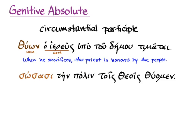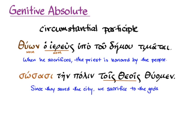Another example: 'sosasi ten polin tois theois thuomen' — 'since they saved the city, we sacrifice to the gods.' Here the participle is agreeing with 'tois theois'; they're both dative. The main clause is 'tois theois thuomen,' 'we sacrifice to the gods.' The participial phrase 'sosusas ten polin' agrees with those gods and tells us who did the saving. So we get: 'since they saved the city, we sacrifice to the gods.'